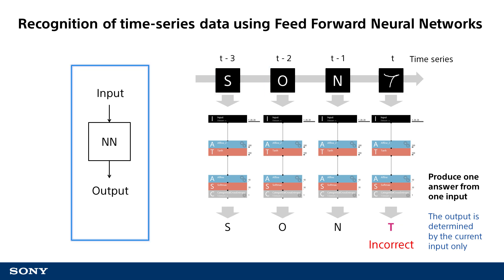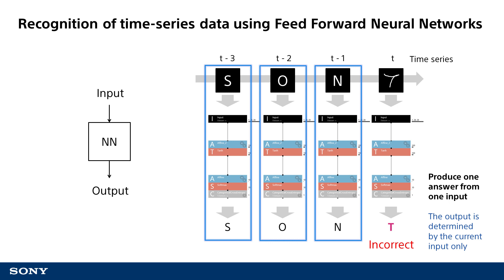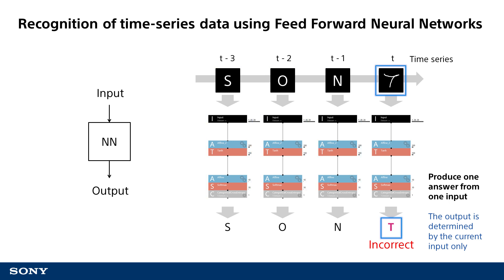The feed-forward neural networks we have already covered have a one-to-one configuration to produce one answer from one input. If a person were to see this character string of S, O, and N, they would easily determine that the next letter could likely be a Y to form the word SONY. A feed-forward neural network can only produce a result based on an input of one letter and so cannot factor time series data. If a neural network processes only the one letter, in this particular example, the image would likely be recognized as a T, which would be incorrect.